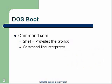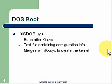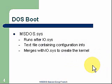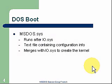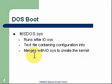The next file is msdos.sys. This runs after io.sys. This is a text file containing some configuration information that io.sys will use to create both the kernel and begin to load itself. So this merges with io.sys to create the kernel.